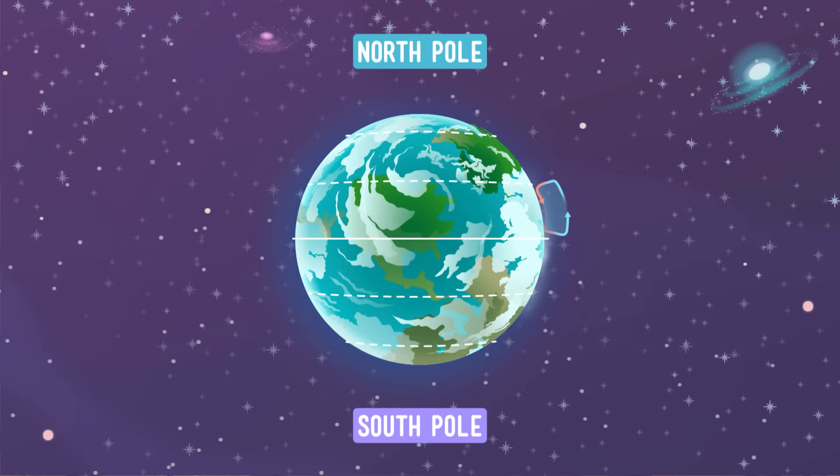The sun hits the equator, causing warm air to rise, and the air moves away from the equator, but it doesn't have time to get all the way to the poles. About a third of the way, the air cools, falls, and moves toward the equator again, creating a smaller cell.